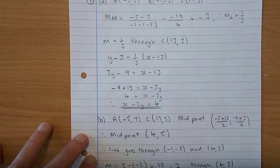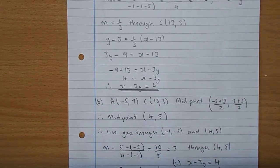So you have 4 equals X take 3Y, so just reversing it, X take 3Y is 4, which is what they wanted.